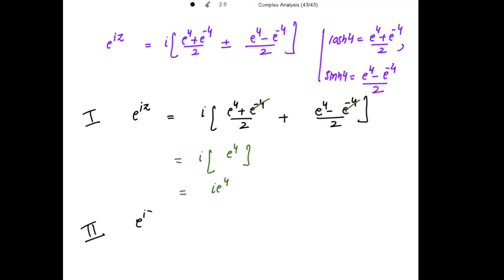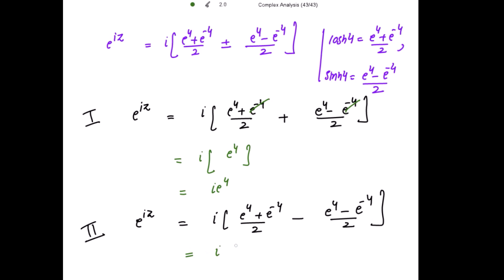Case 2: e to the power iota z equals iota times e to the power 4 plus e to the power negative 4 divided by 2, minus e to the power 4 minus e to the power negative 4 divided by 2. On subtracting, the e to the power 4 terms cancel and we get iota times e to the power negative 4.